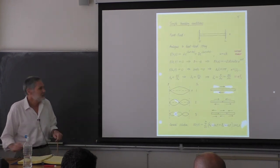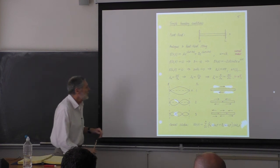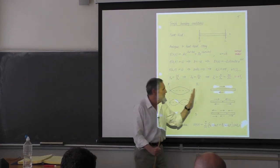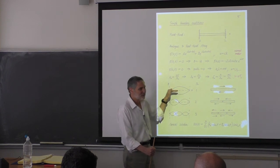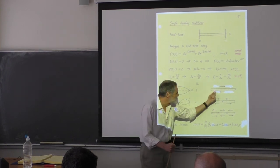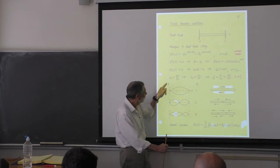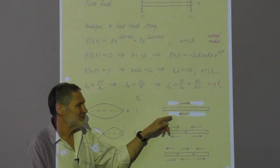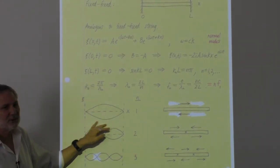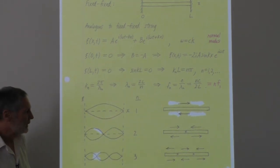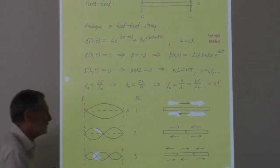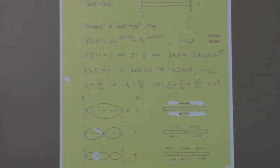We looked at simple boundary conditions, and everything is just like a string — but there is one difference. The motion here is longitudinal, not transverse. If you plot the displacement on the y-axis and x on the x-axis, you'll see something that looks just like a string, but it's harder to visualize because it's longitudinal.